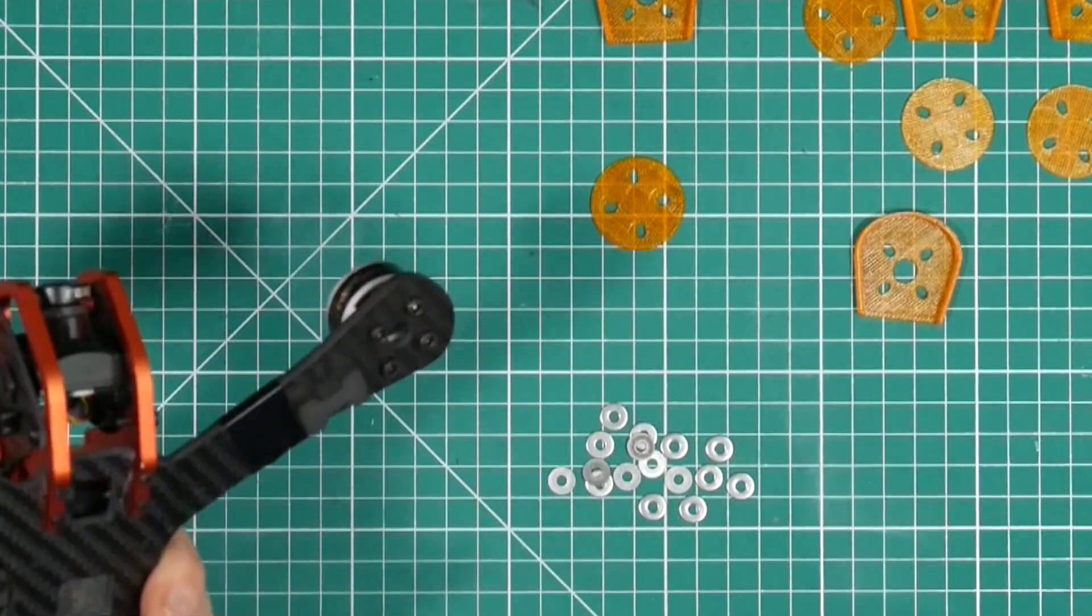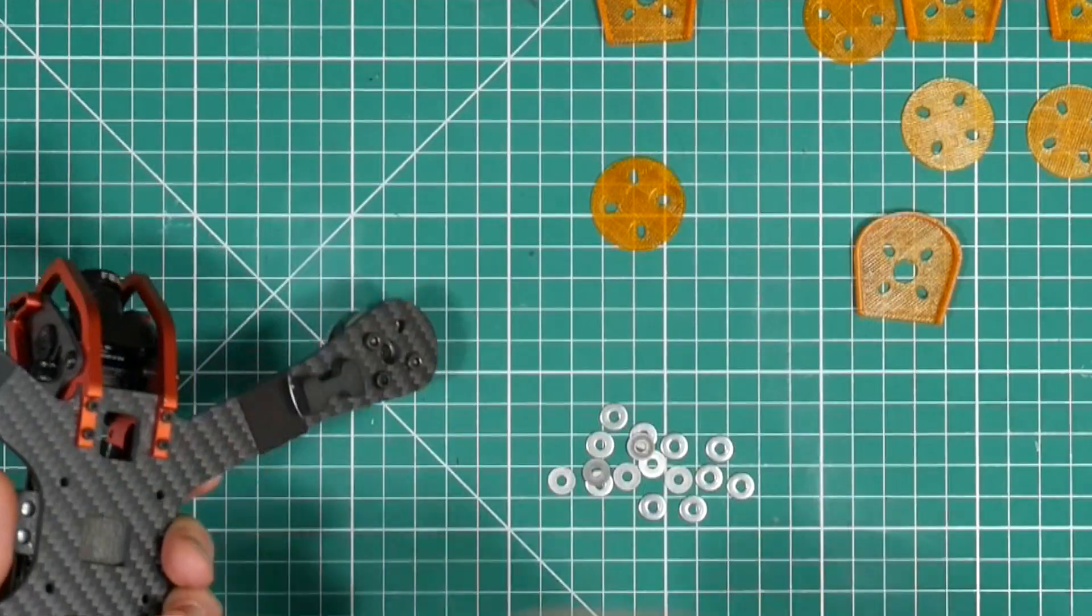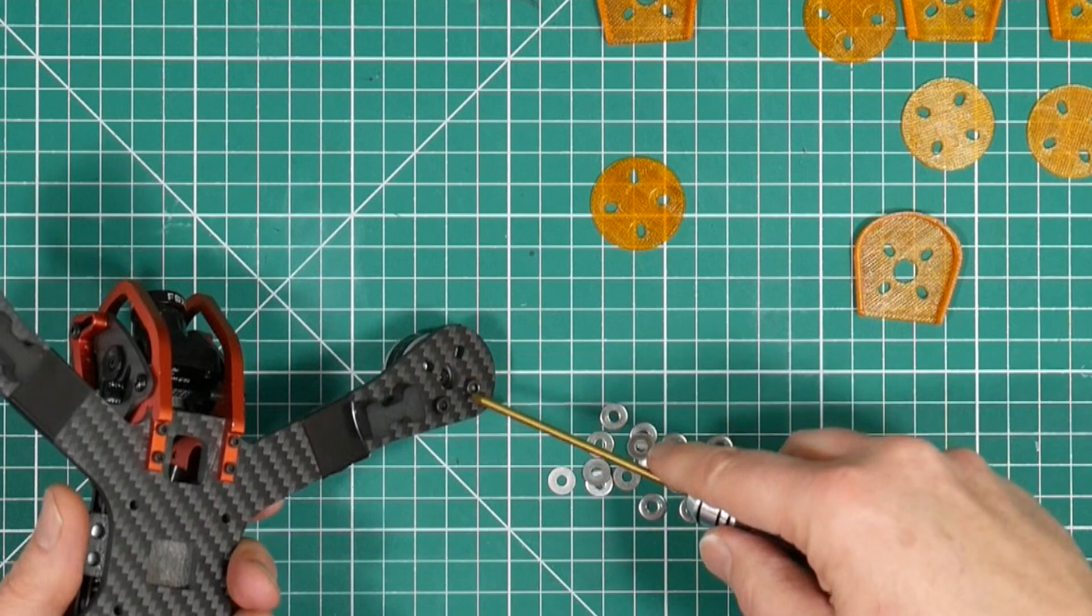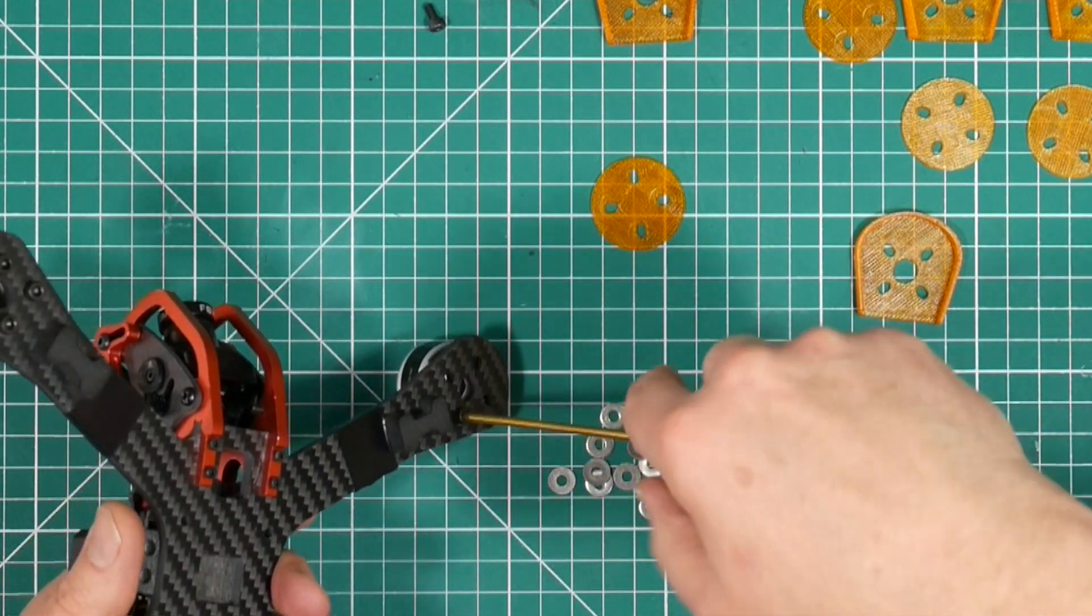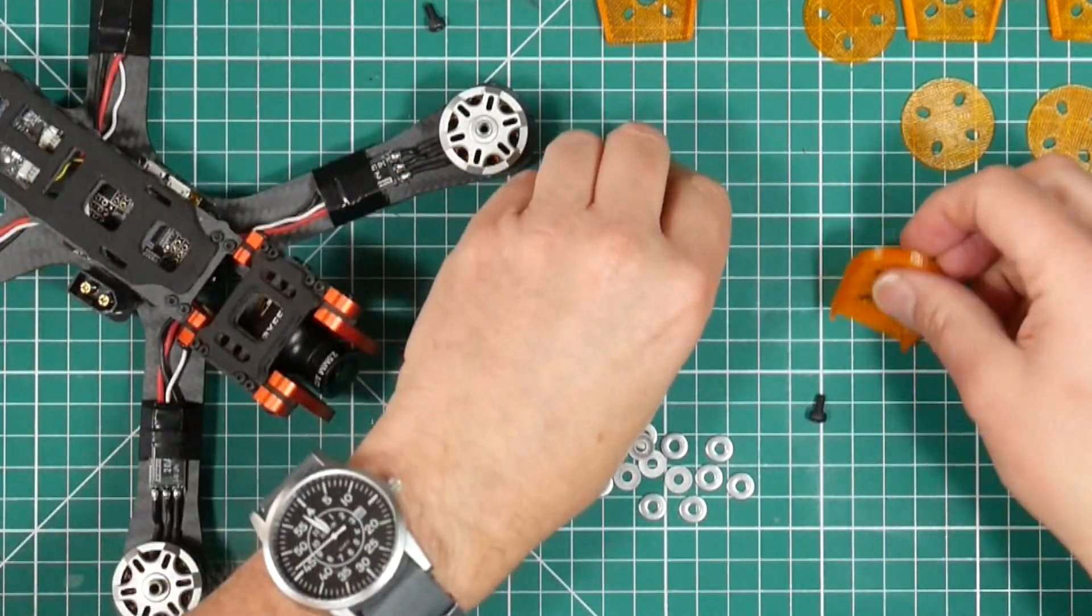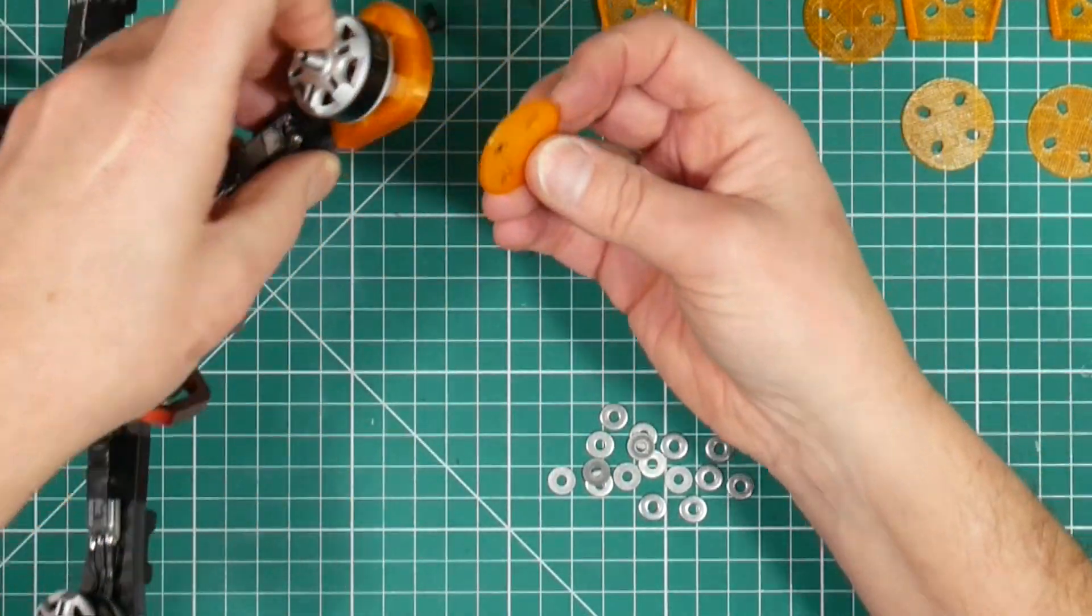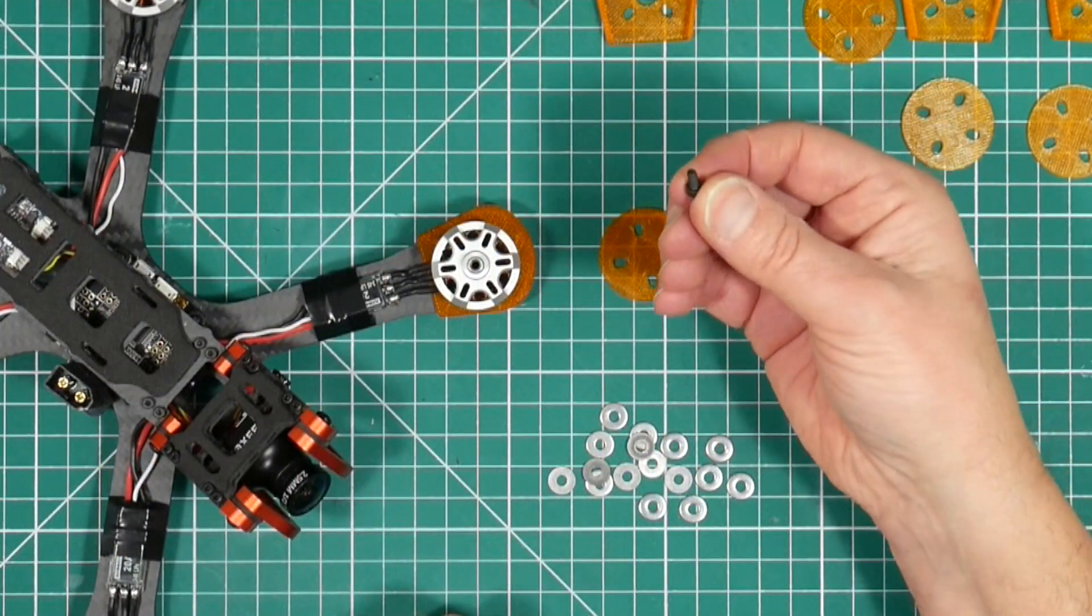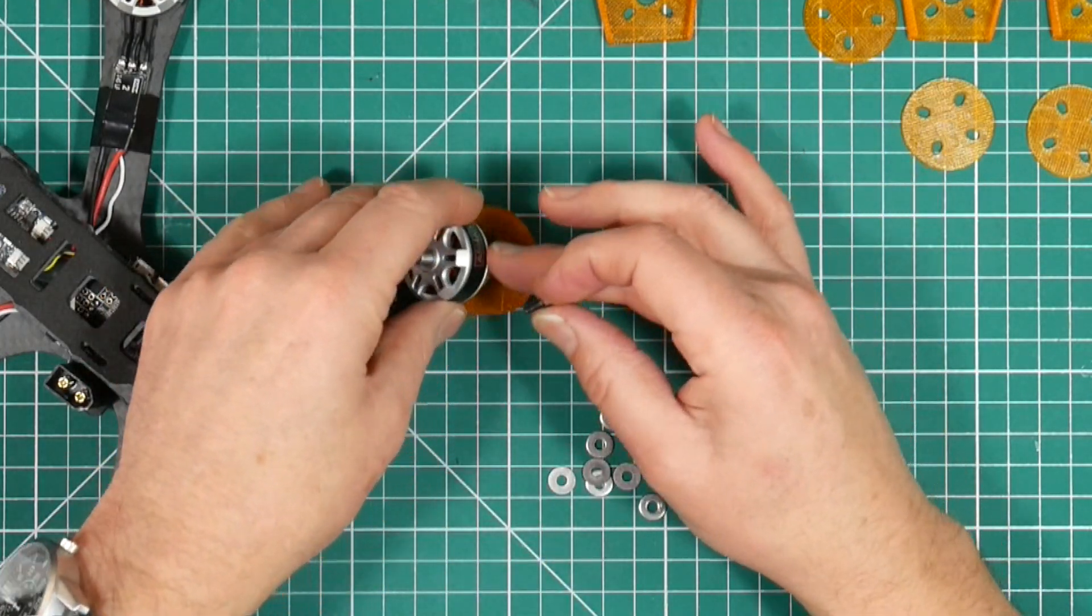So to fit these, all we need to do is remove the bolts from the existing frame and motor. Now one thing you'll need to do is source some replacement bolts, because obviously when you put this on here and then put the mount underneath and the washer, the original bolts are going to be too short. They won't engage in the threads in the motor.